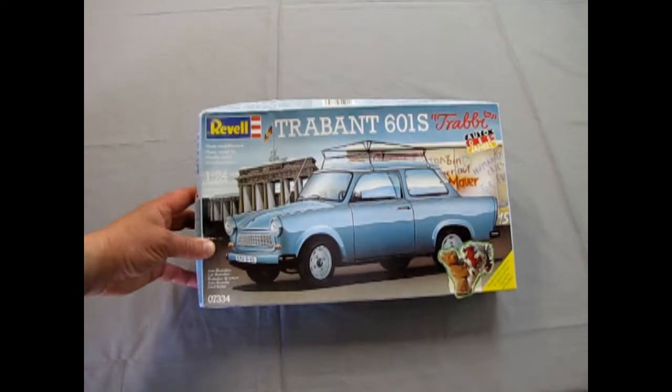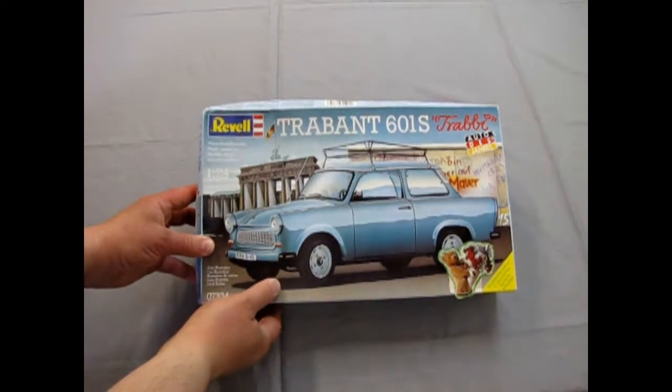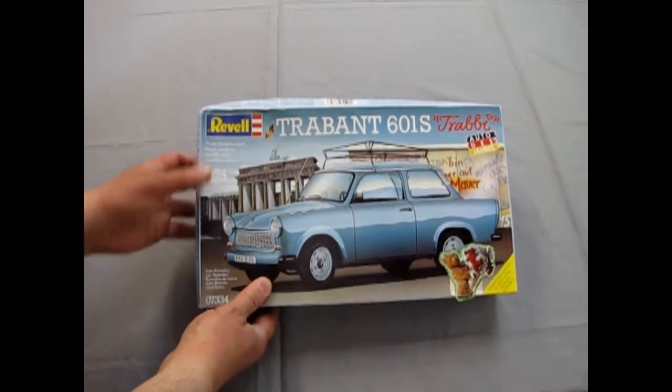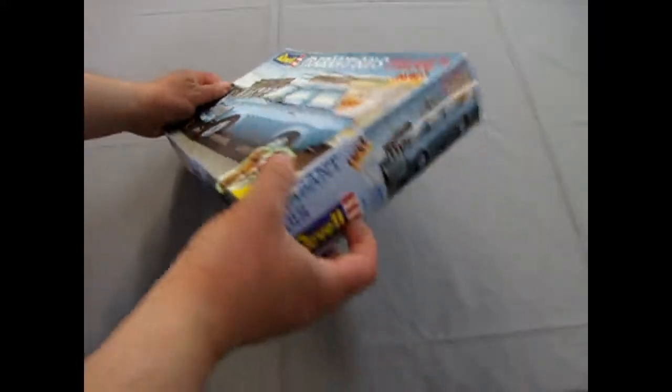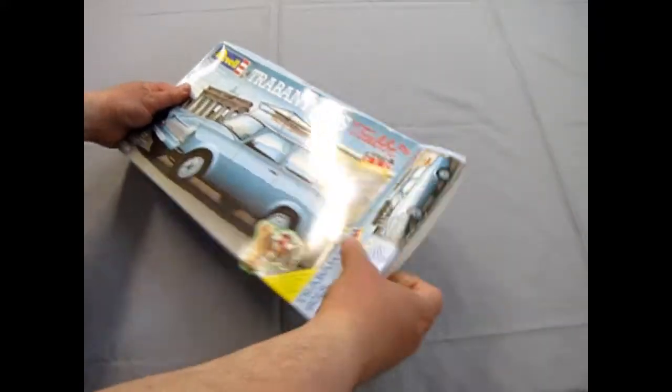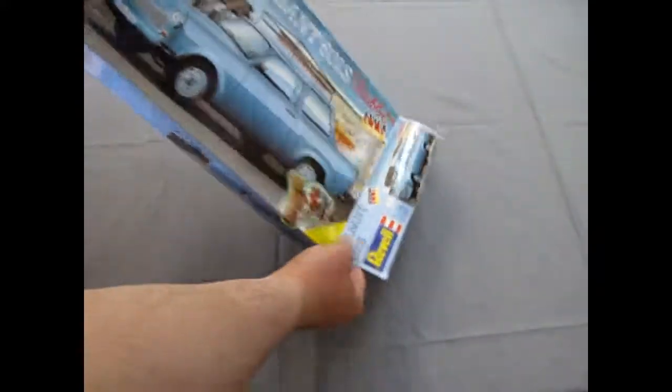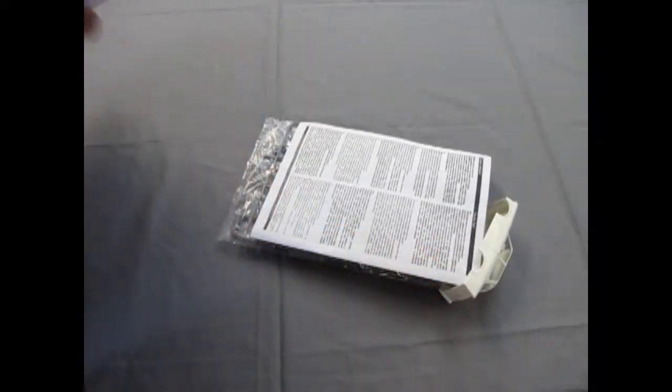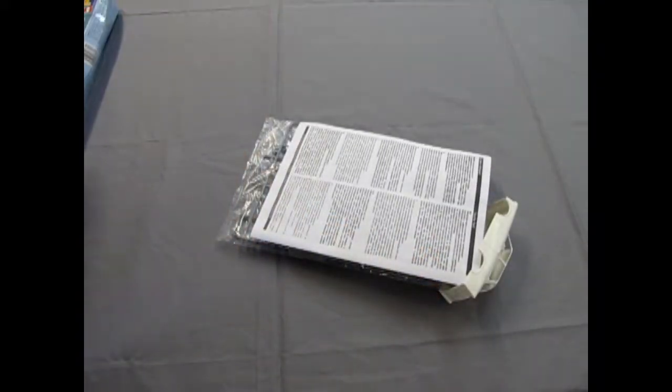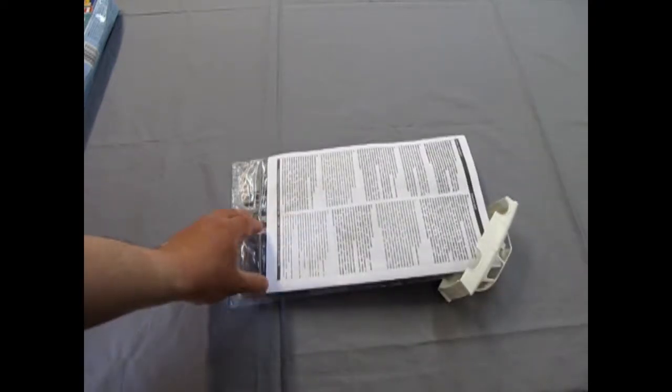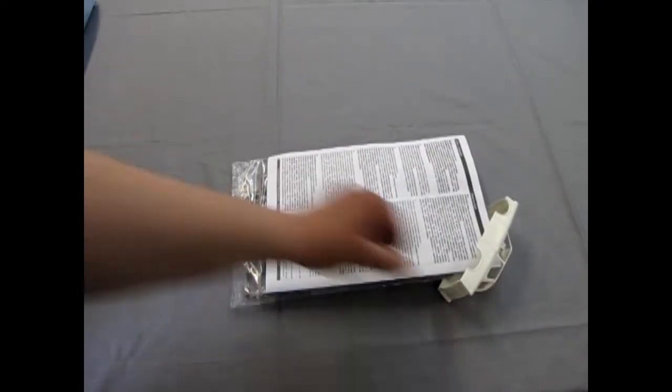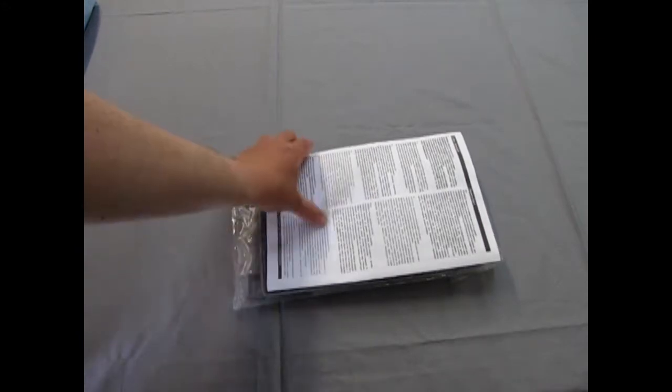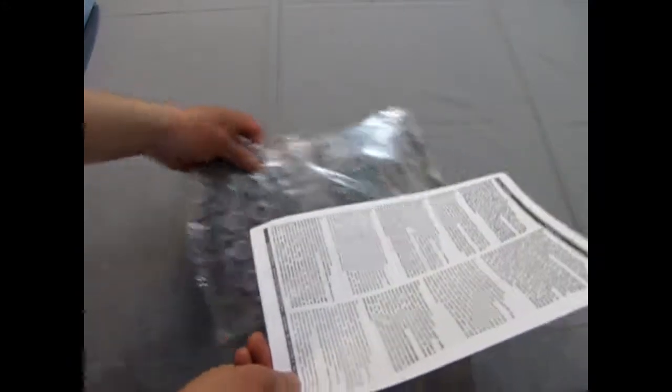Now for another car out of the former Communist East Germany. We have the Trabant 601S Trabi. And now let's open her up and examine this little jewel. Just move the plastic pieces out of the way for a minute as we examine the instructions.